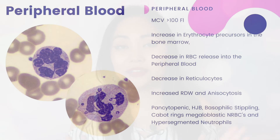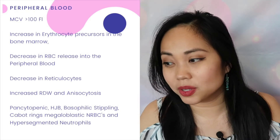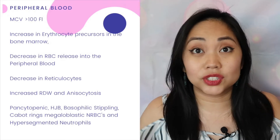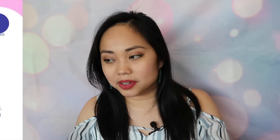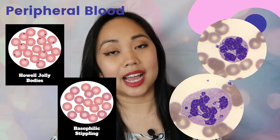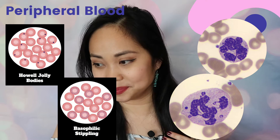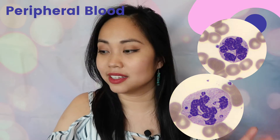The peripheral blood picture of folic acid deficiency is the same as in vitamin B12 deficiency: MCV greater than 100, macro-ovalocytes, increased erythrocyte precursors in the bone marrow, decreased RBC release into peripheral blood, decreased reticulocytes, increased RDW, anisocytosis, pancytopenia, Howell-Jolly bodies, basophilic stippling, Cabot rings, megaloblastic NRBCs, and hypersegmented neutrophils with more than five lobes.